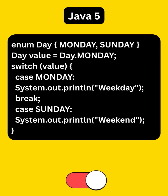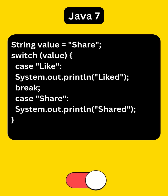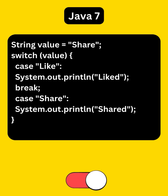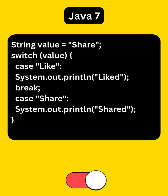Java 5 introduced support for enum, then Java 7 added string support for switch. The implementation does use hash code and equals method internally, but remember it is case sensitive and does not work with null.